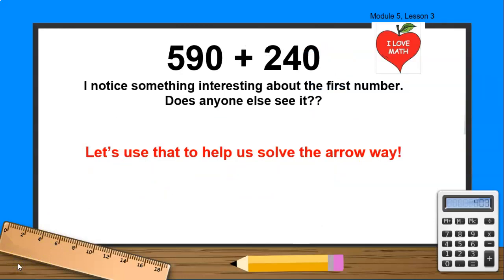Okay, boys and girls. Let's work the last problem together. Still using the arrow way. So we have 590 plus 240. I noticed something interesting about the first number. Do you see it? What do you guys think it is? Yes, boys and girls. If you said that 590 is close to 600, you're right. It's just 10 away from 600, right? So I can make the next 100 to solve the problem. So today, and with this problem, I'm gonna show you how I want you to use the key points in PearDeck.